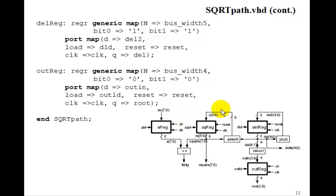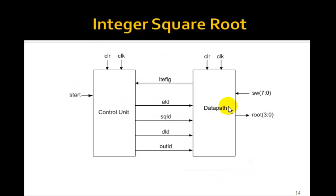For the delta register, it's going to be a 5-bit register, so we set N to bus width 5. And the initial value of delta has to be 3, so we'll set bit 0 and bit 1 both to 1, so that will be a binary 3. And then Q is del, and the load is the deload. And the output register will clear this to 0, so both these bit 0s and bit 1 are 0s, and the bus width is 4. And Q goes to root, which is going to be our output, and the load goes to outload. So that's the datapath.